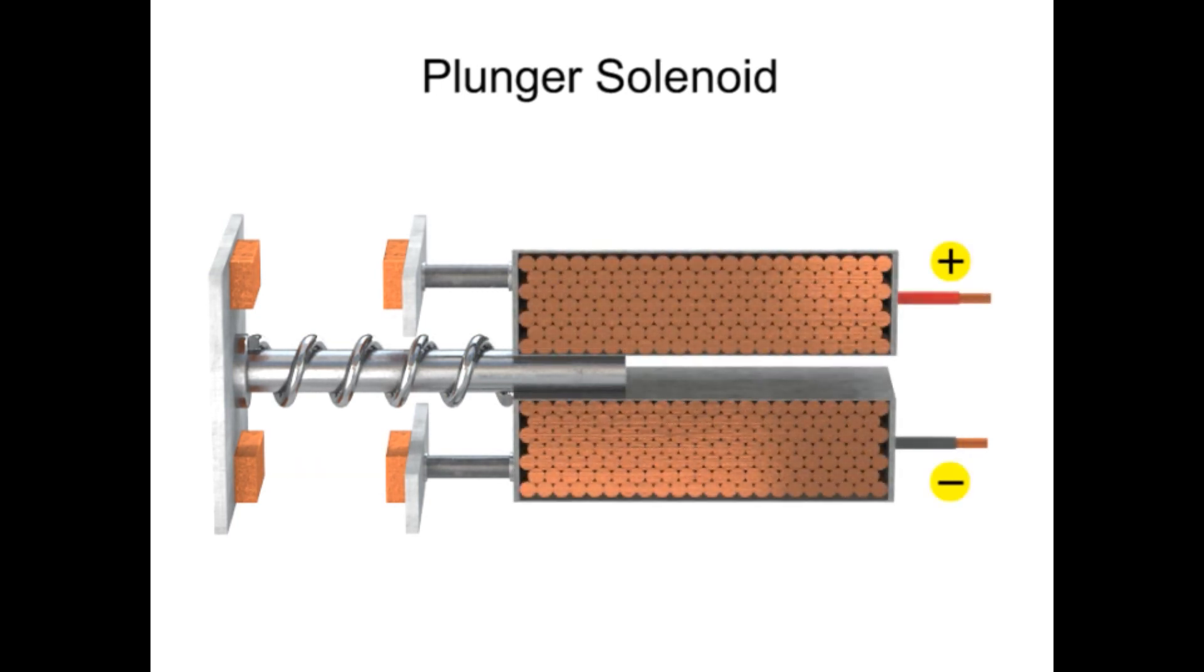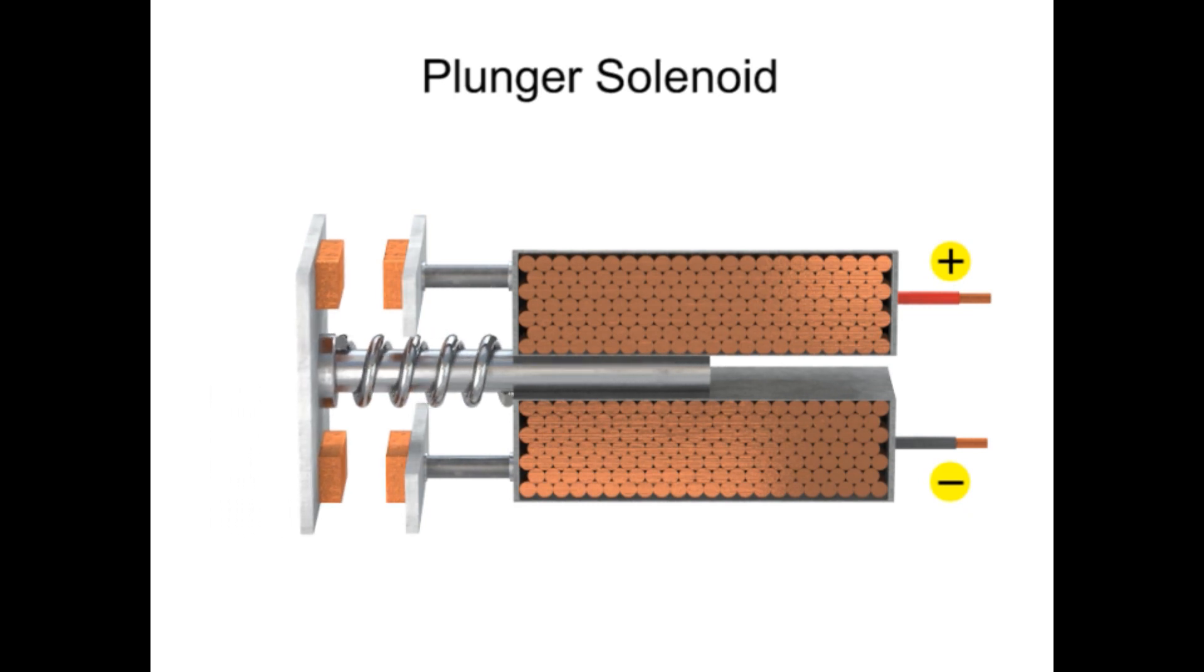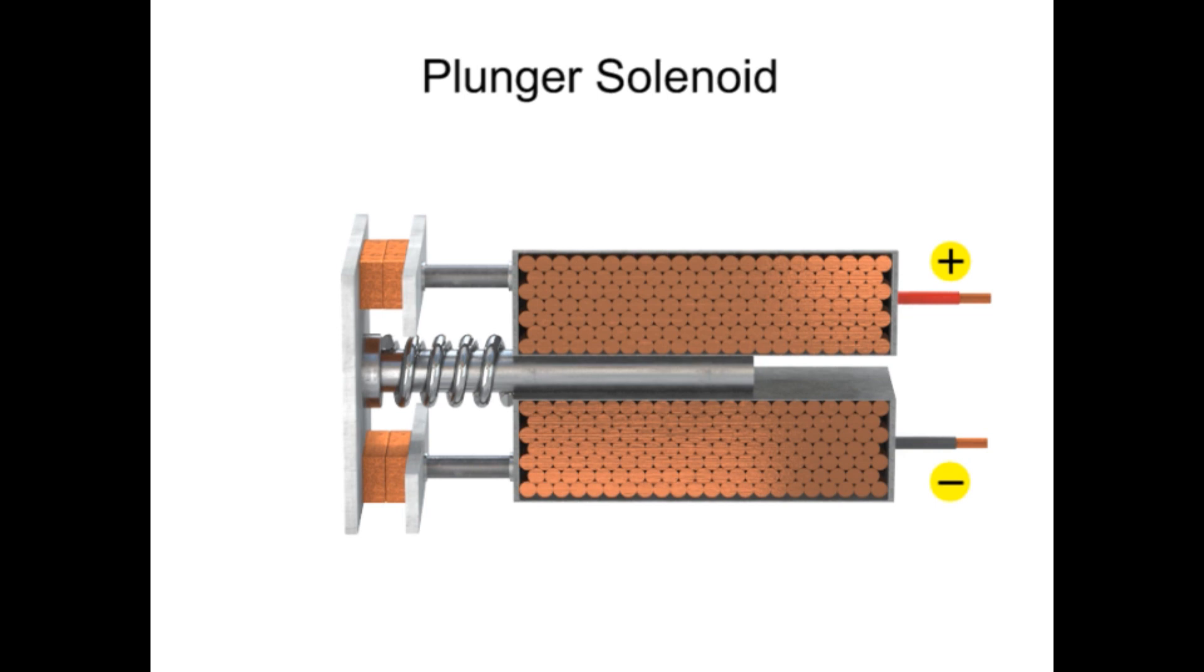When an electrical current passes through the coil, it generates a magnetic field that attracts the rod into the coiled chamber. The movement of the rod will move the contacts into a closed position.